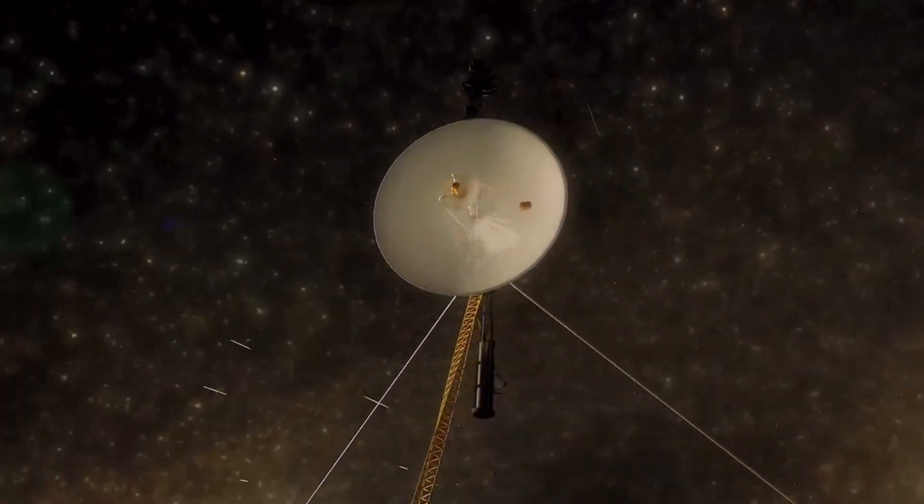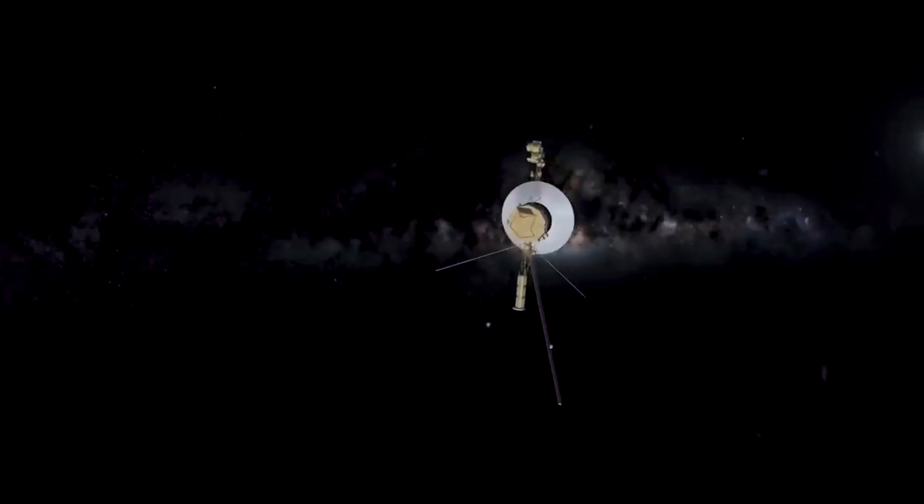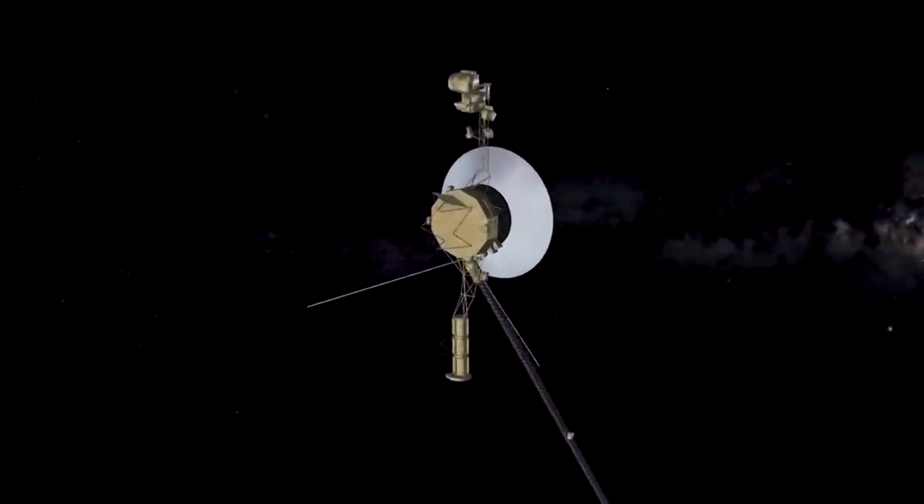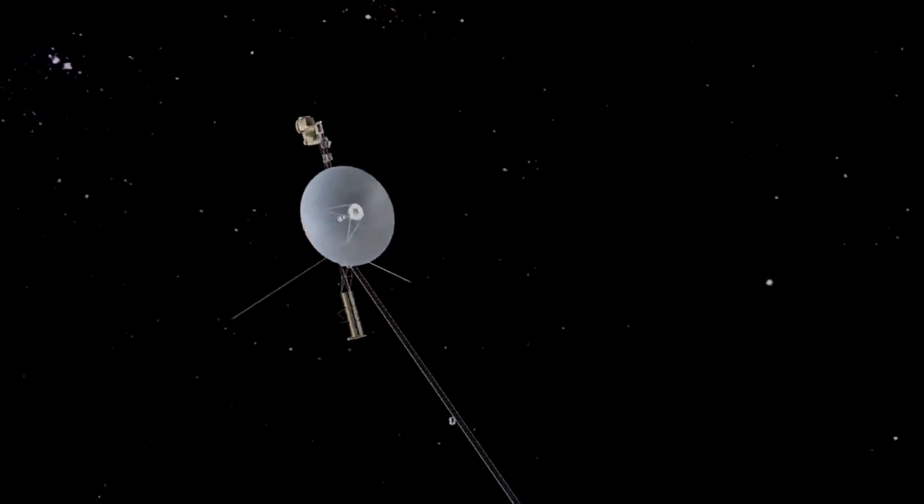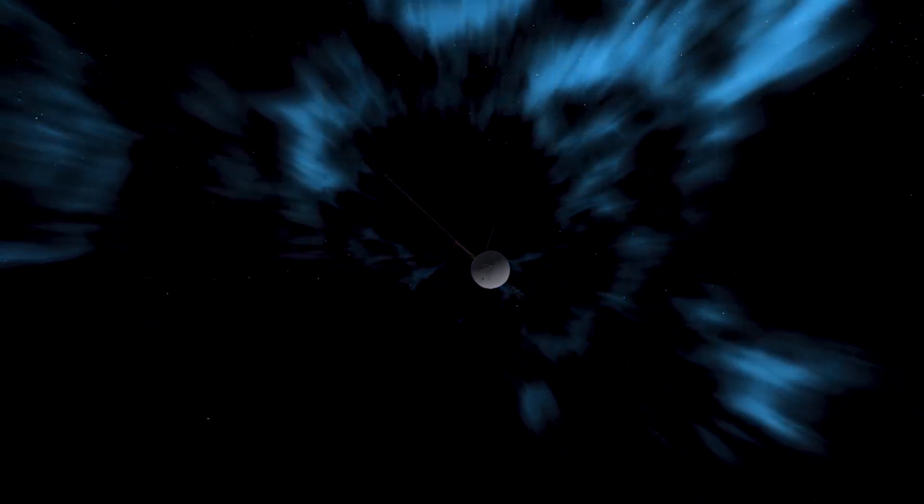Voyager 1 and Voyager 2, identical in every detail, were launched within 15 days of each other in the summer of 1977. After nearly 45 years in space, they are still functioning, sending data back to Earth every day from beyond the solar system's most distant known planets. They have traveled farther and lasted longer than any other spacecraft in history.